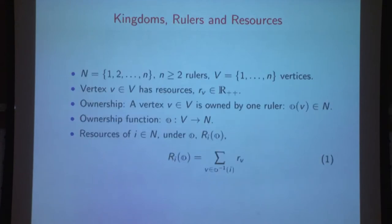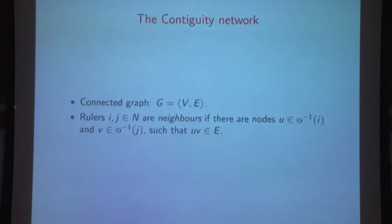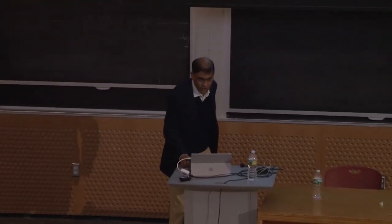More formally, there are n rulers represented as vertices, every vertex has a resource endowment R_v, and an ownership function maps vertices to their ruler. The resources a ruler i has in an ownership state O is simply the sum of resources of all vertices it controls. Two rulers are neighbors if they control vertices that have a link in the underlying network. That's the basic setting.